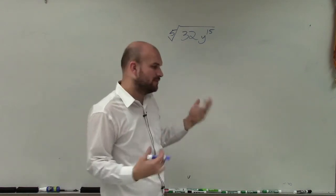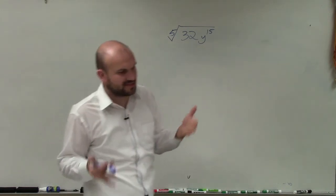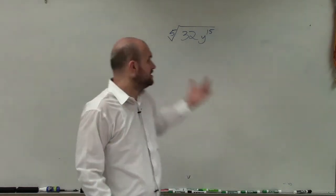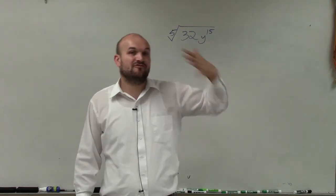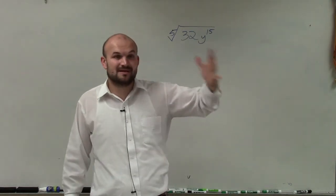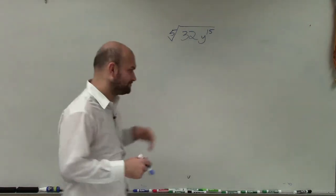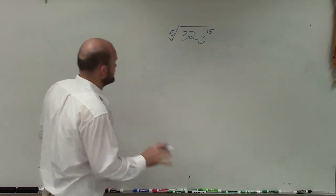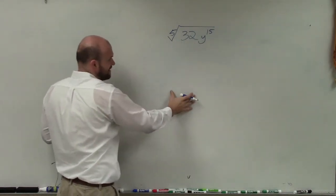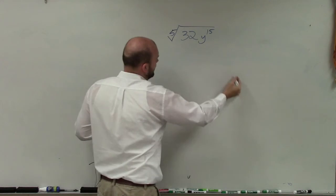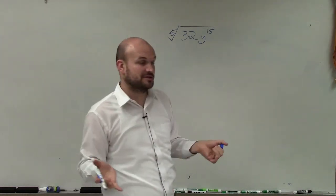Now, remember, when we're dealing with square roots, basically what the square represents is what number multiplied by itself. So when we're looking at the fifth root, we're saying what number multiplied by itself five times is going to give us 32 and then y to the fifteenth. There are a couple of ways we can do this — we could write down the prime factorization and then count if we can get five of the same number for 32.